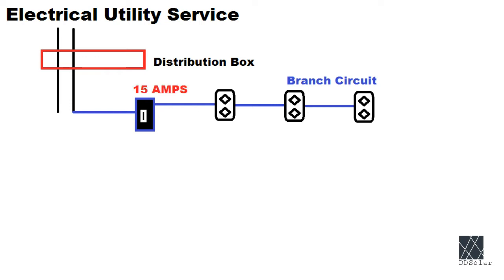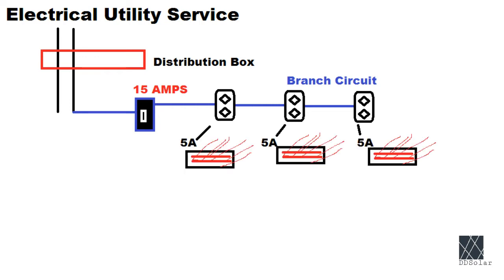In the United States at least a typical circuit breaker in a residential home might be rated at 15 amps. If you were to plug three 5 amp heaters one into each outlet on this branch circuit of 15 amps the total current would be 15 amps and the breakers should not trip.